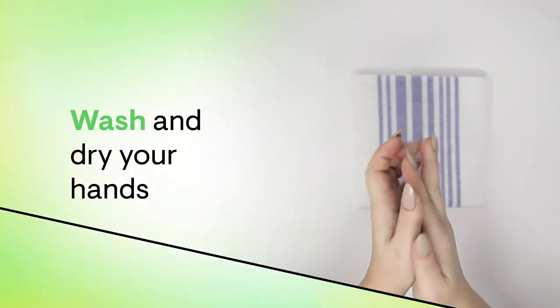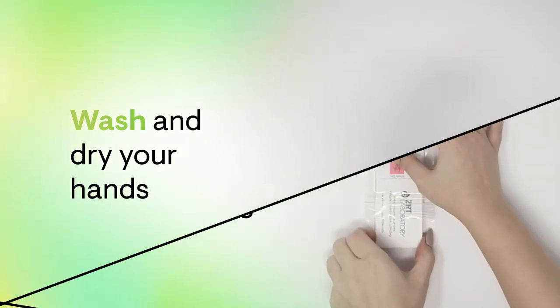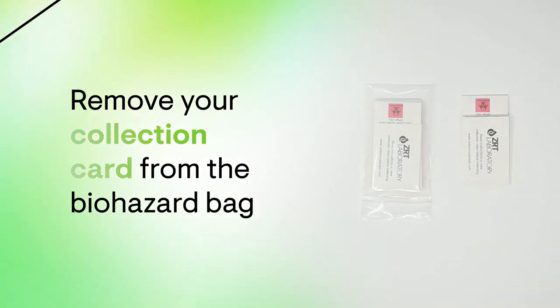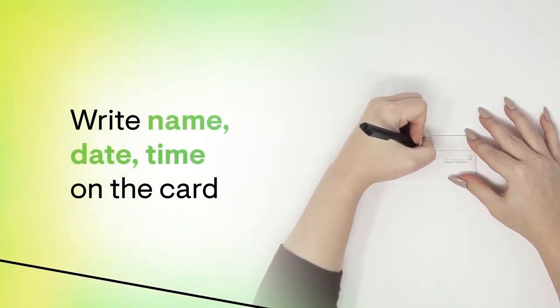Before beginning your first collection, wash your hands with soap and water and dry them with a clean towel. The first step will be to remove a urine collection card from the biohazard bag. Then write your name, the date, and time of collection on the card.